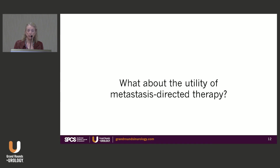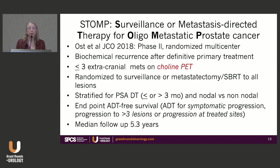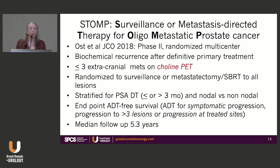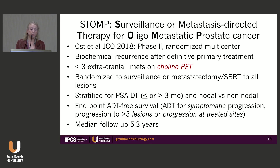Regarding treating the metastases: the STOMP trial — Surveillance or Metastasis-directed Therapy for Oligometastatic Prostate Cancer — was published in JCO in 2018 by Ost, a phase two randomized multicenter trial. It enrolled patients with biochemical recurrence after definitive primary treatment and three or fewer extracranial metastases, staged with choline PET, randomized to either surveillance or treatment of metastases with metastasectomy or SABR to all lesions, stratified by PSA doubling time and nodal versus non-nodal status.